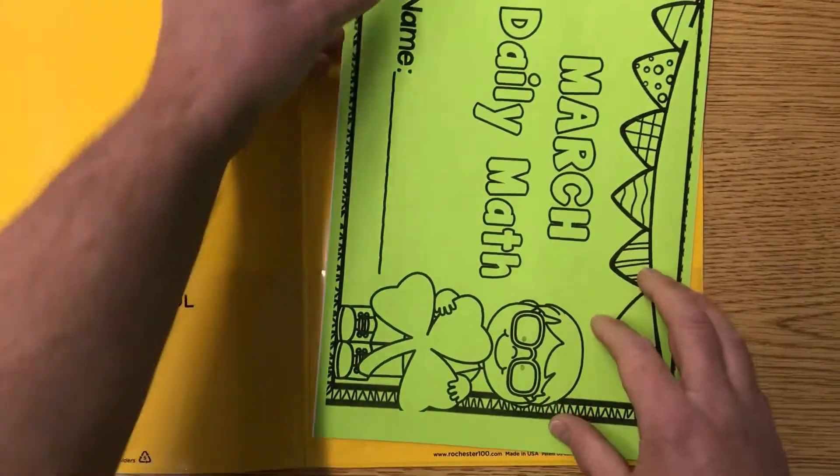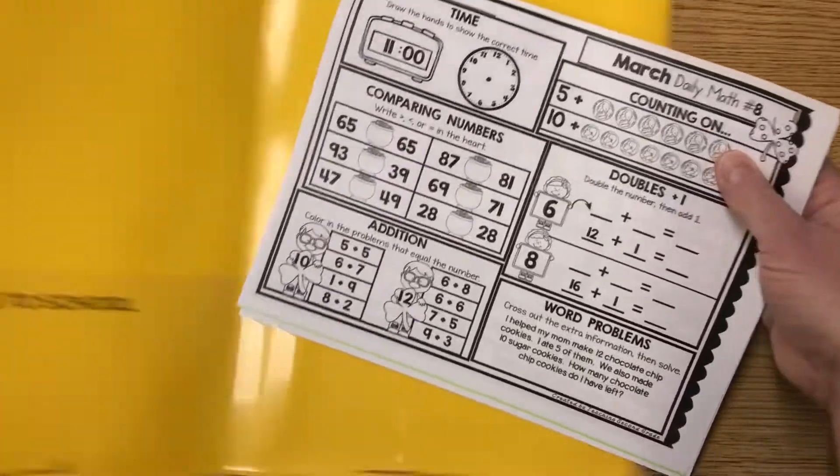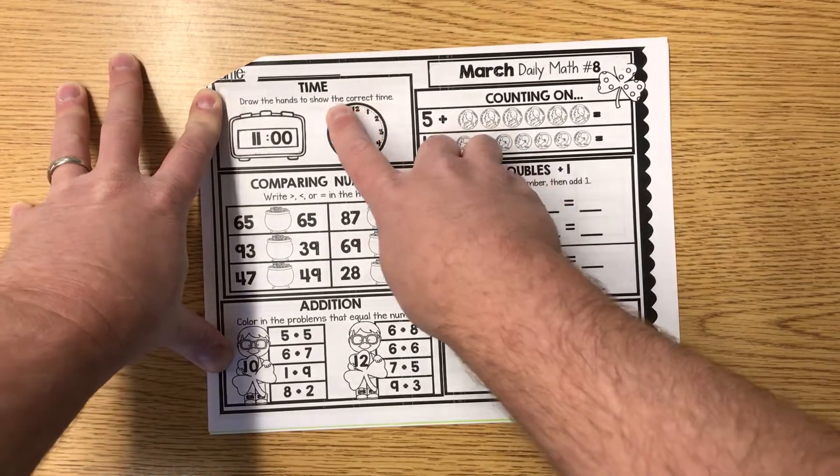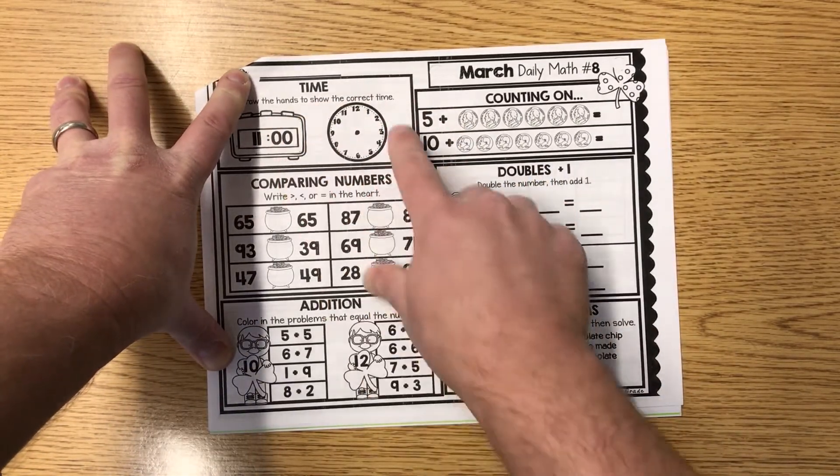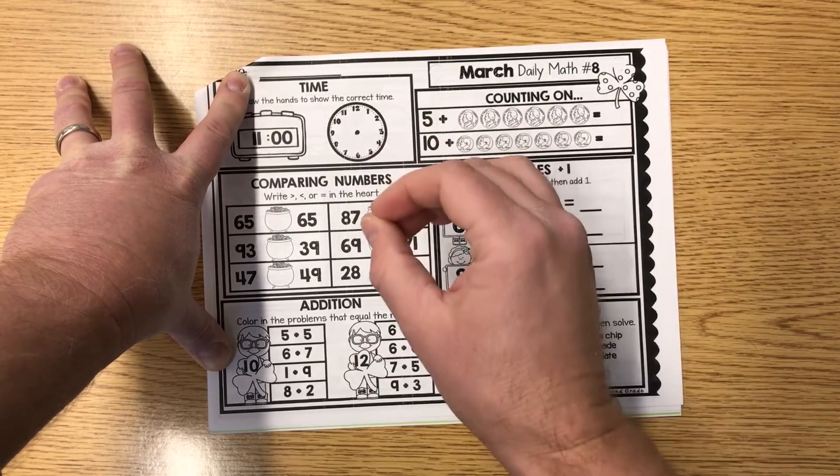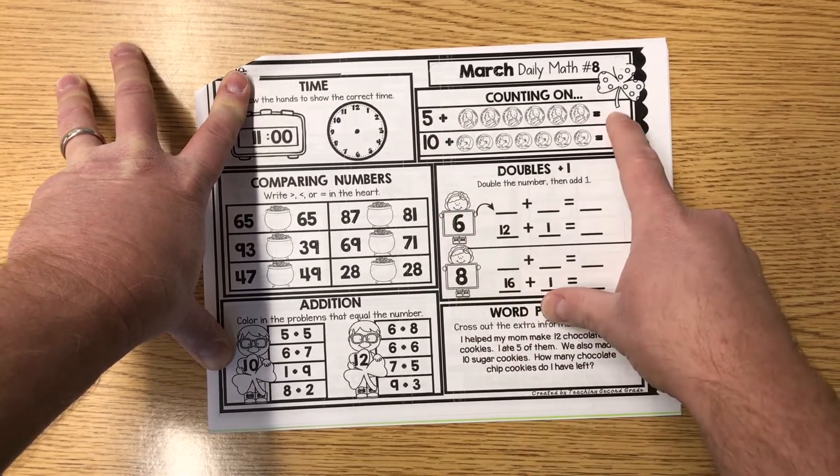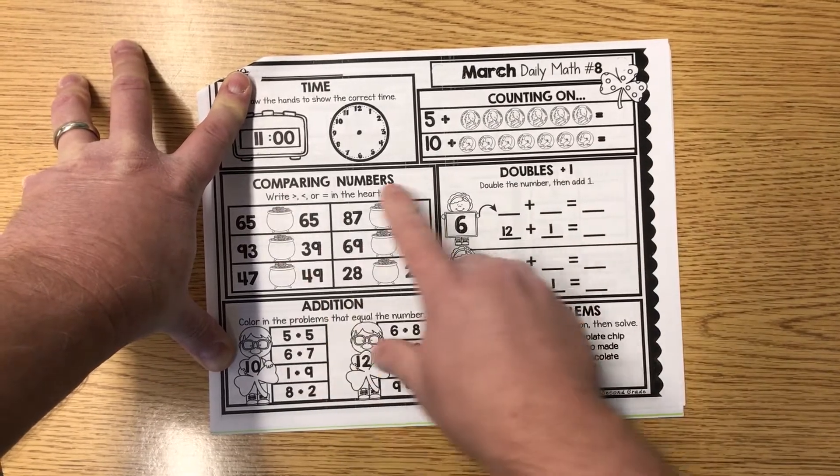All right, let's go ahead and look at your math today, and we're going to be working on page eight. Write your name neatly on the line. Here's some time: draw the hands to show the correct time for 11 o'clock. Remember the hour hand's a short hand and the long hand is for minutes. Counting on: we got 5 plus this amount, write your total; 10 plus this amount, write your total.